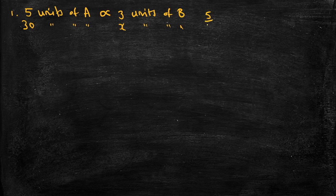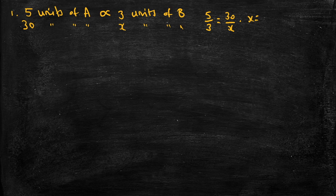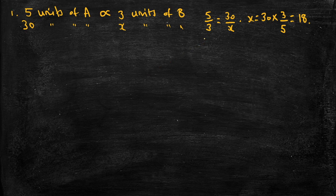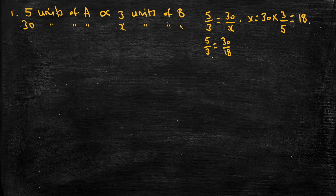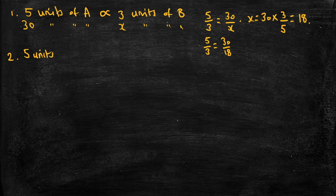We can say that five over three is equal to 30 over X, and then solve for X. X will be equal to 30 times 3 over 5, which comes to 18. We can check: five over three must equal 30 over 18, and those are equivalent fractions because if I multiply five by six I get 30, and if I multiply three by six I get 18.